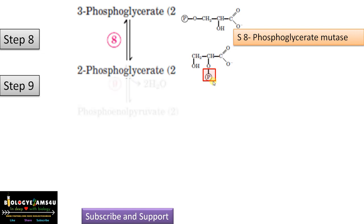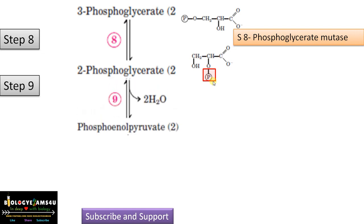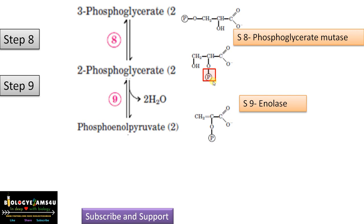In step 9, 2-phosphoglycerate is converted to phosphoenolpyruvate with the release of water, and the enzyme is enolase.